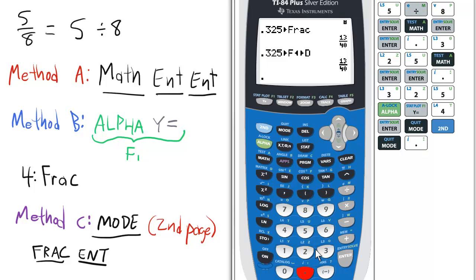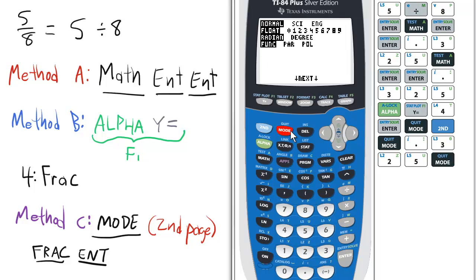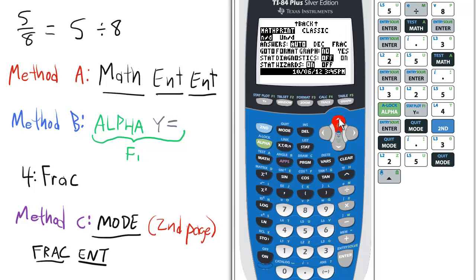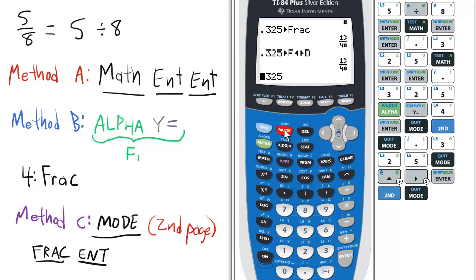Let's say again we have .325, and then we go to mode, scroll up to the second page, and I want to go up to about the third line where it says auto des or frac. Scroll over to frac, make sure it's selected, press enter, and then quit.